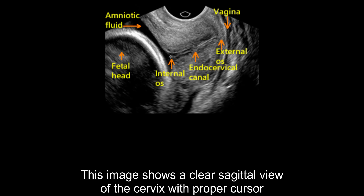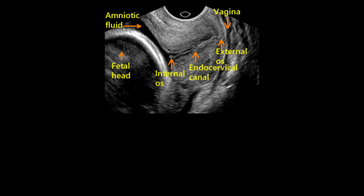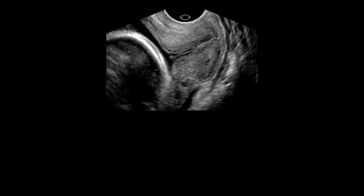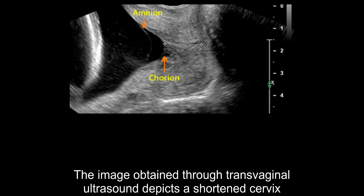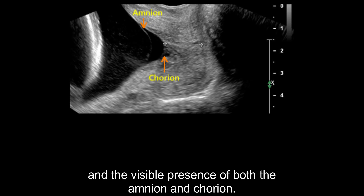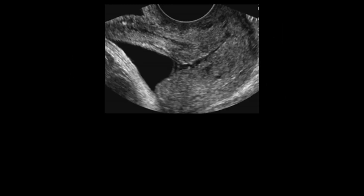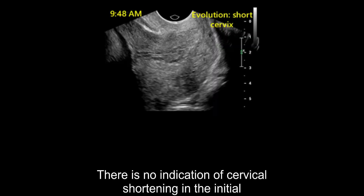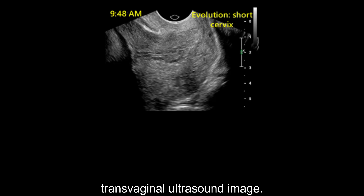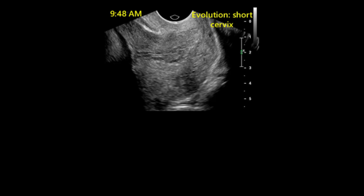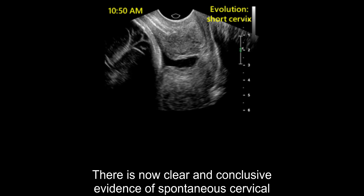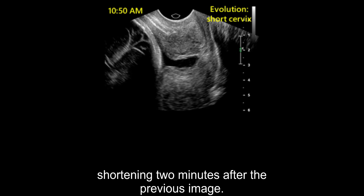This image shows a clear sagittal view of the cervix with proper cursor placement for measurement. Another image obtained through transvaginal ultrasound depicts a shortened cervix and the visible presence of both the amnion and chorion. There is no indication of cervical shortening in the initial transvaginal ultrasound image over a two-minute observation window. Note the time recorded on the image. There is now clear and conclusive evidence of spontaneous cervical shortening two minutes after the previous image.